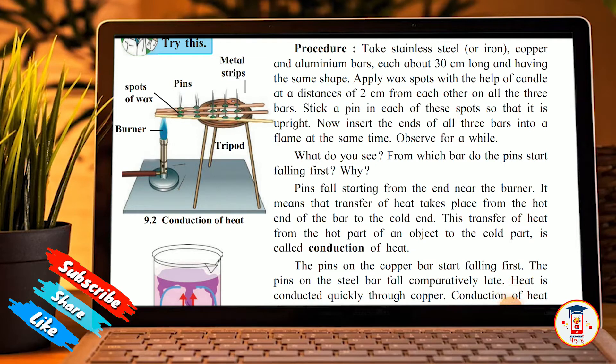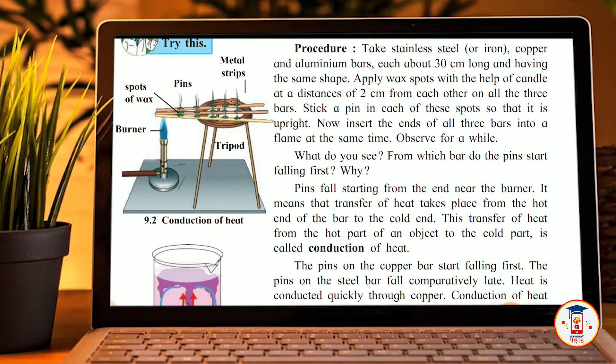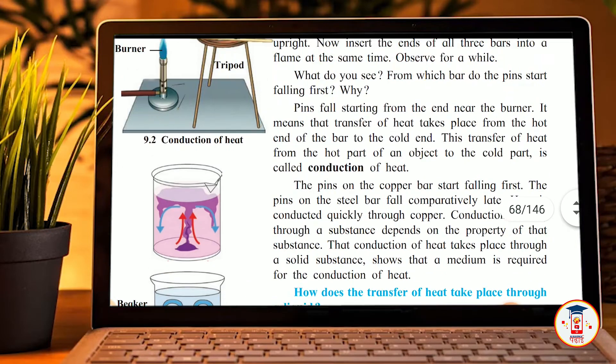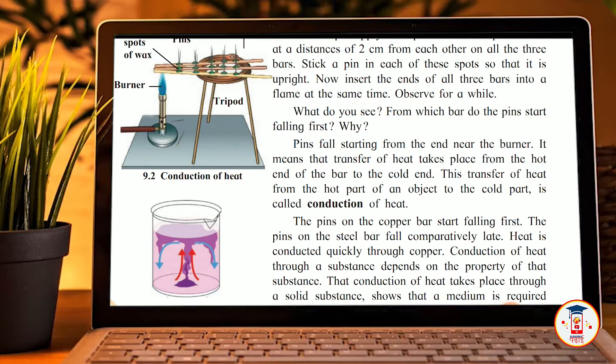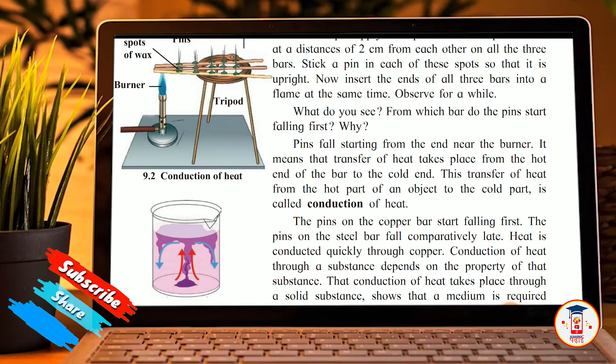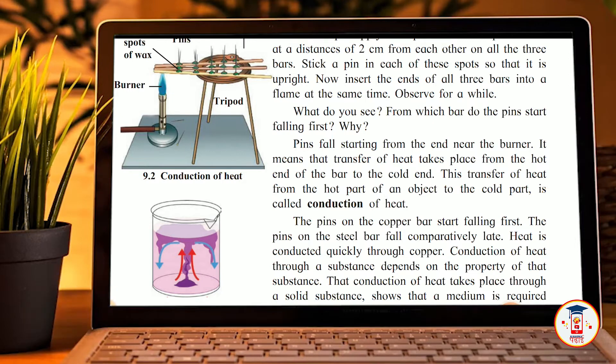This process is called conduction of heat. The pins on the copper bar start falling first. The pins on the steel bar start falling comparatively late. Heat conducts quicker through copper. Conduction of heat through a substance depends on the property of that substance. The conduction of heat takes place through a solid substance, showing that a medium is required for conduction of heat.